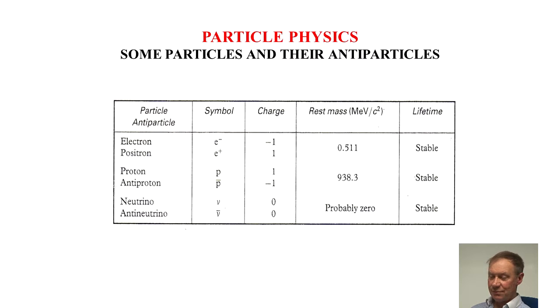Here are some particles and their antiparticles. Electron has an antiparticle of the positron, E minus and E plus, as you can see. Charge is minus one, plus one.